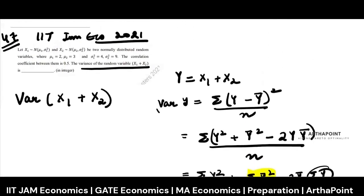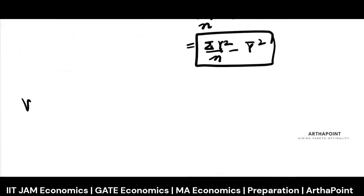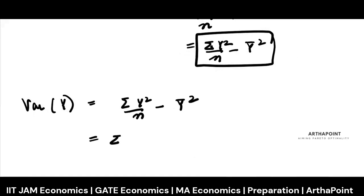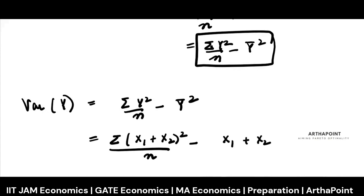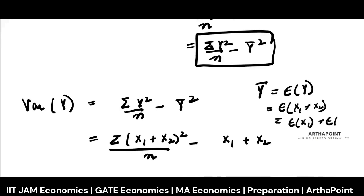Now substituting Y = X1 + X2, the variance of Y is Σ(X1 + X2)²/n minus the mean of Y squared. The mean ȳ is the expected value of X1 + X2, which equals E(X1) + E(X2) = μ1 + μ2. So the squared mean term is (μ1 + μ2)².